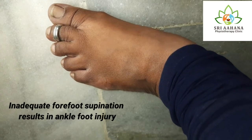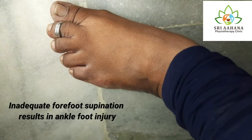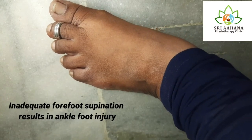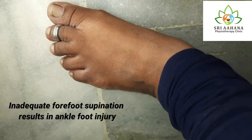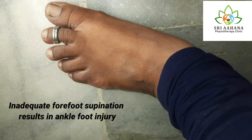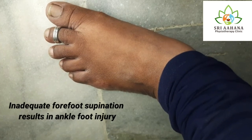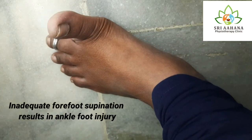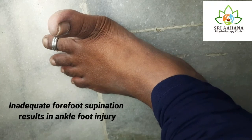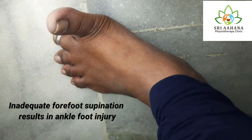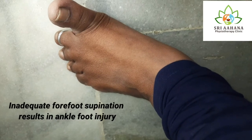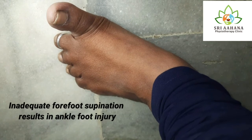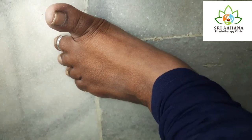Whenever there is pronation at the hind foot, the calcaneus will evert, the talus will plantar flex and adduct. Due to the movement of the head of talus moving into plantar flexion, the navicular bones will be pushed down. This limits the ability of the transverse tarsal joint to supinate. The first and second rays will go into dorsiflexion, and the fourth and fifth toes will go into plantar flexion when the hind foot is still pronated. This is called the supination twist of the tarsometatarsal joints in an attempt to maintain the forefoot to the ground.